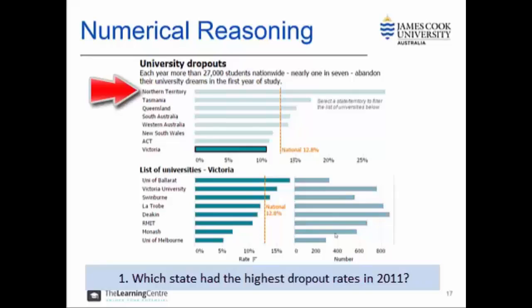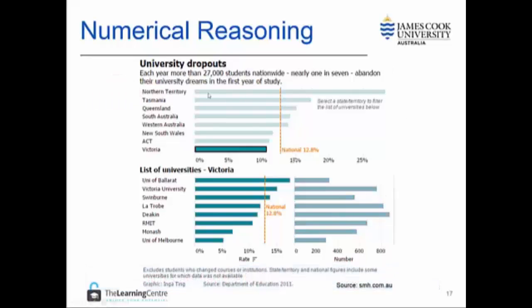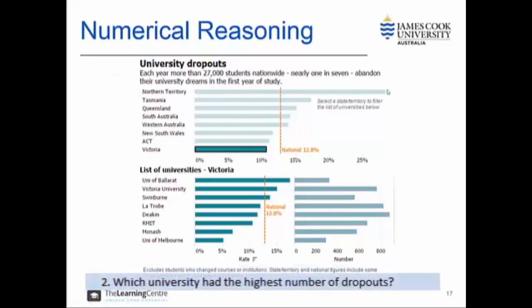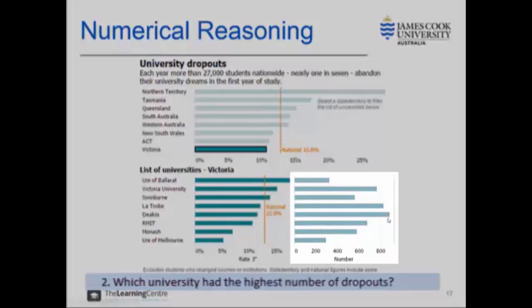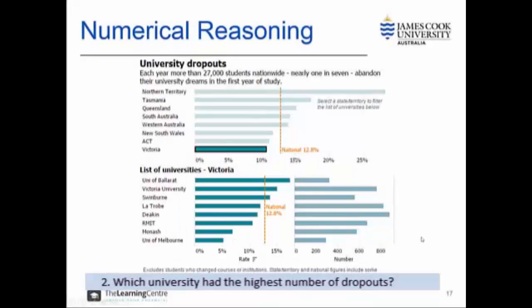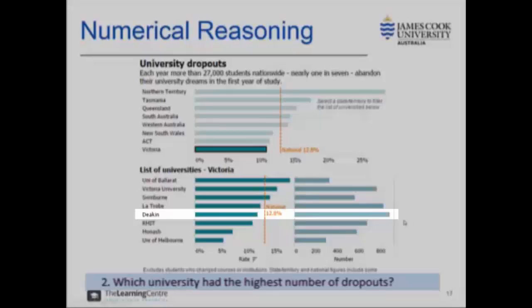The second question asks which university had the highest number of dropouts. This information is contained in the bottom graph. This graph has two parts and we need to identify which section shows us the number. The right-hand side is the number, whereas the left shows the rates or percentages. By looking at this section, we can see that Deakin has the highest number at around 830 students.